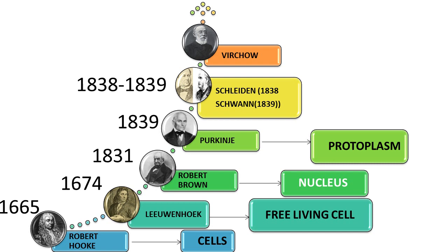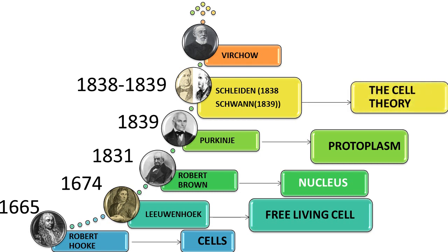In 1838 and 1839, during that period, two scientists — Schleiden and Schwann — discovered the cell theory. The cell theory states that all plants and all animals are made of cells, and cells are the basic unit of life.